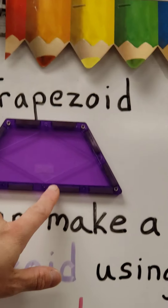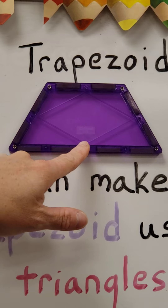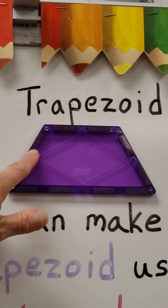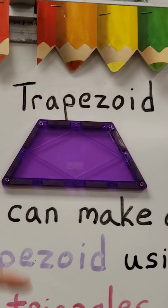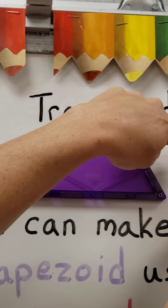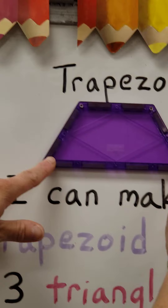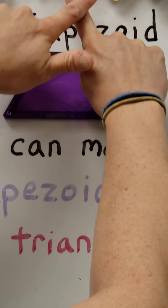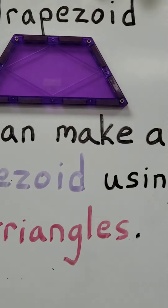Our next shape is a trapezoid. Can everyone say trapezoid? A trapezoid has four sides and four vertices. But two sides are parallel — that means they would just continue going out straight forever and they would never cross each other. The other two sides, if they kept going up, they're going to intersect or cross each other if those lines kept going. And that's how we know it's a trapezoid.